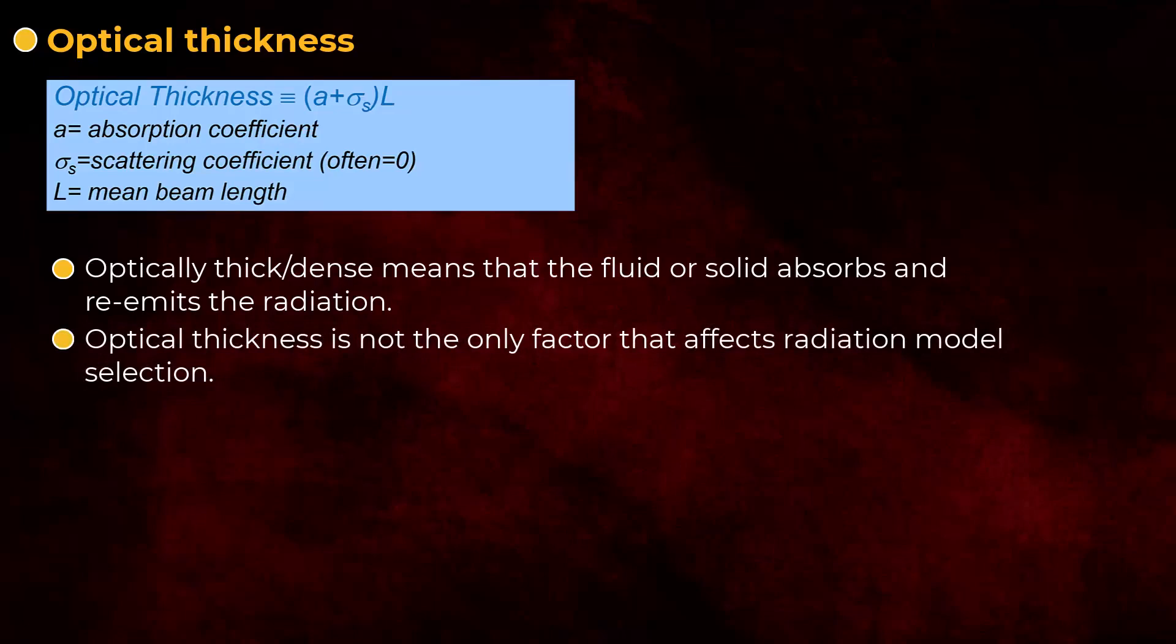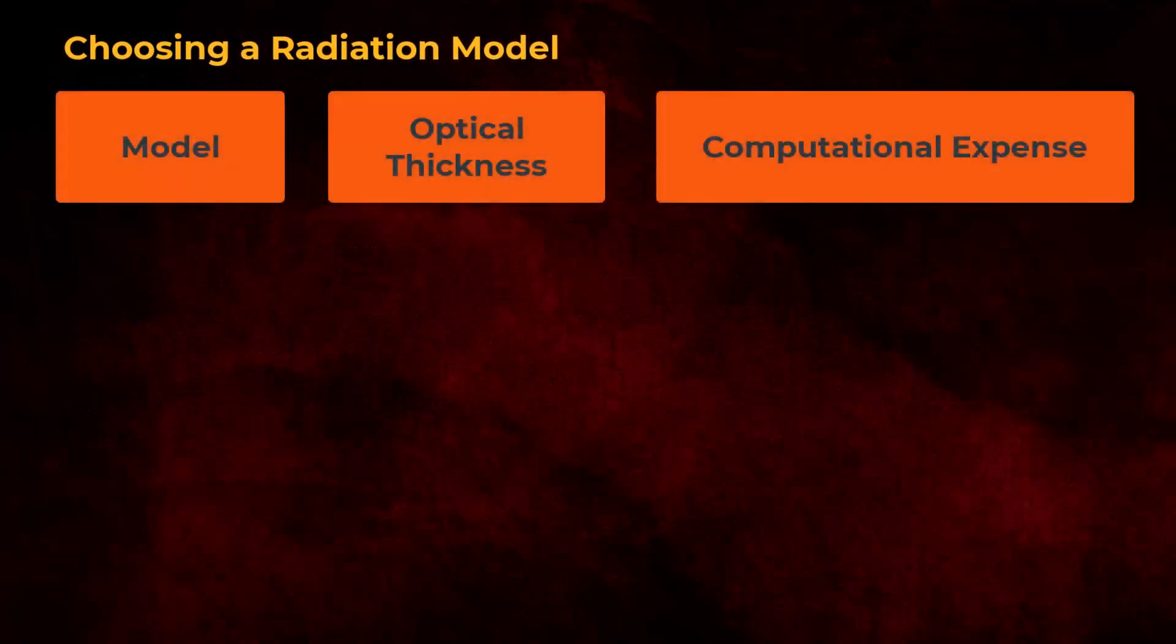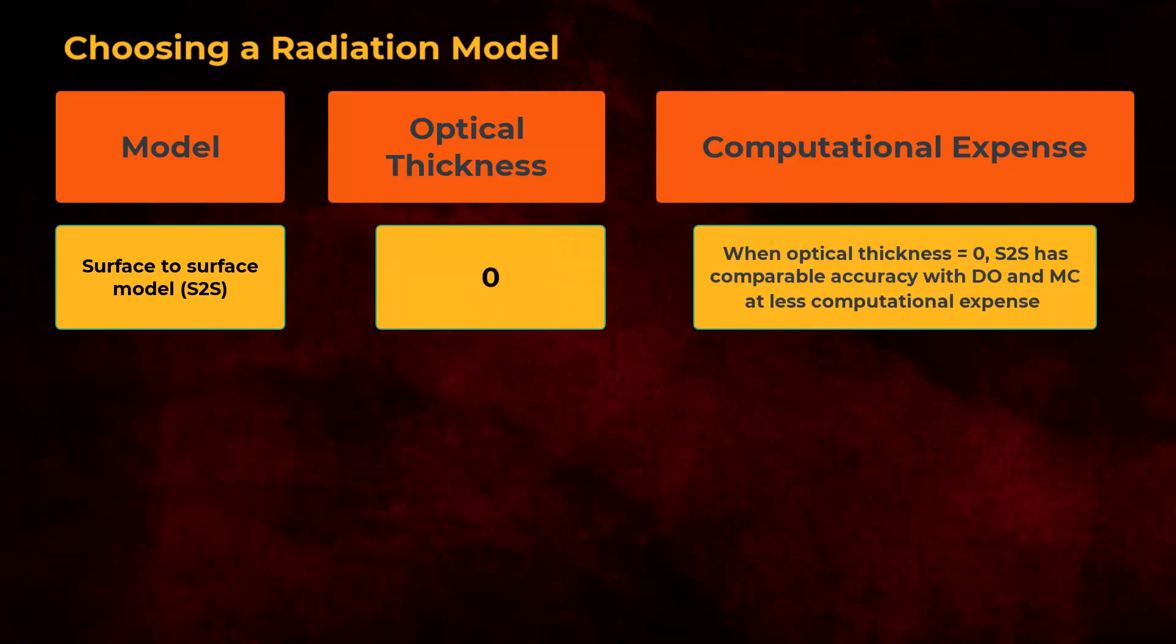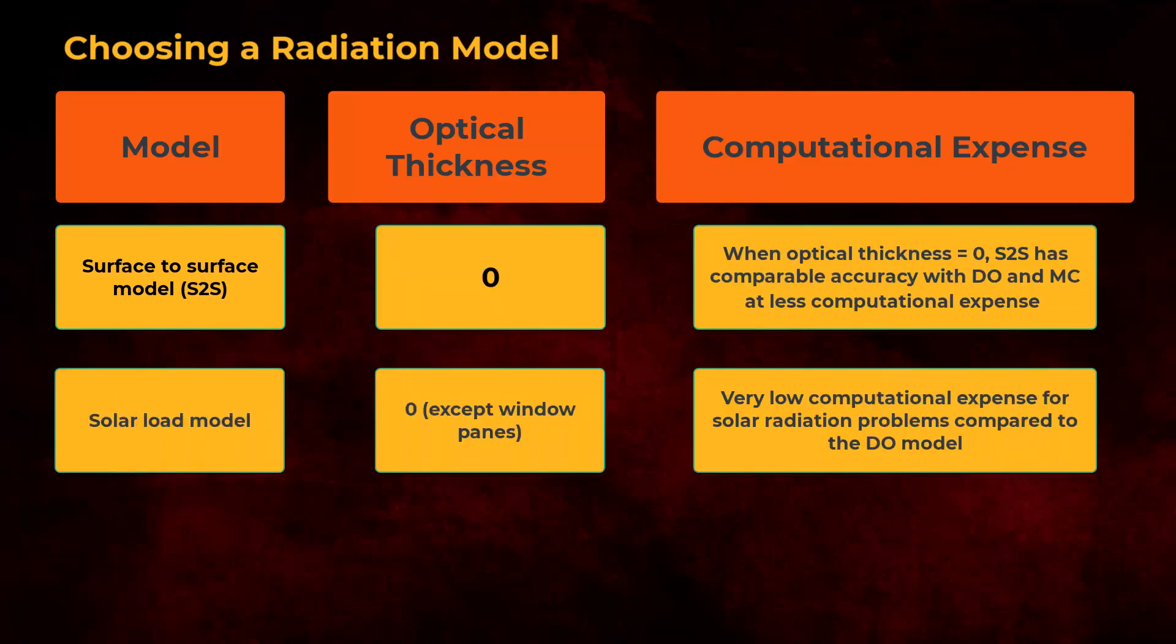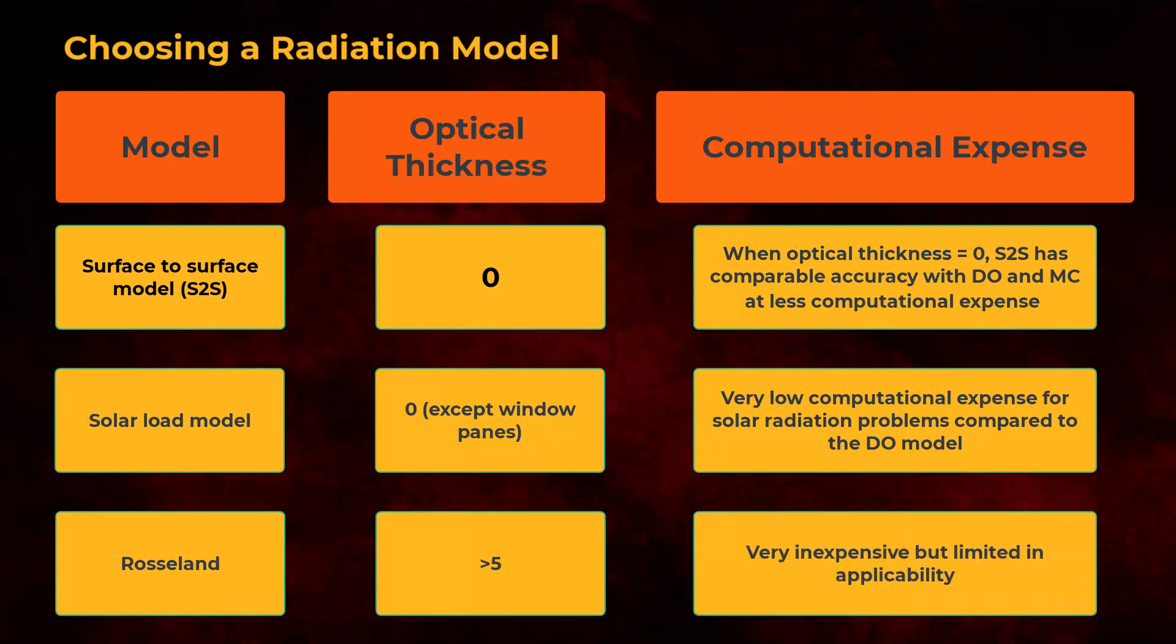Optical thickness is not the only factor that affects radiation model selection, but it can be used as an initial criterion to narrow down the number of choices. The surface-to-surface model, also known as the S2S model, can be used only if the optical thickness is zero, and the same is true for the solar load model, although that model can handle the presence of windows. The Rossland model is only valid if the optical thickness is very high, so it is rarely used.